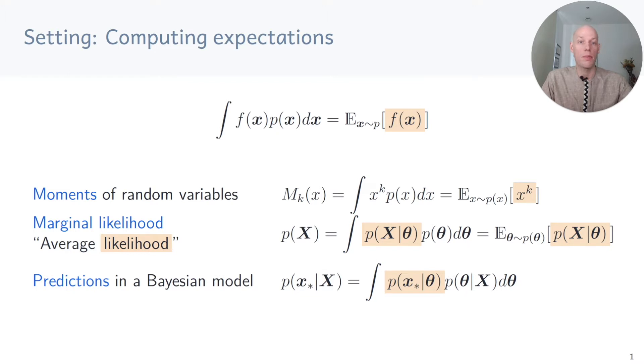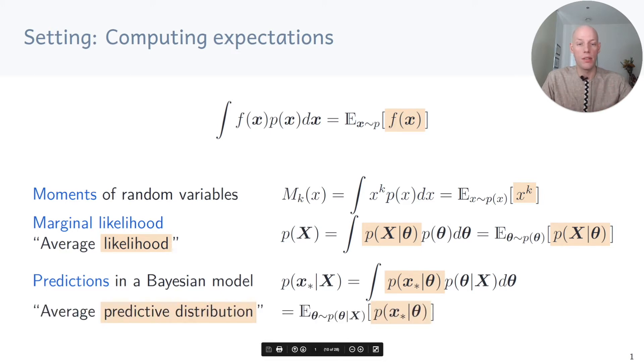A third place where expectations appear is when we make predictions in a Bayesian model. With the parameter posterior p of theta given x, the predictive distribution is the integral of p of x star given theta times this parameter posterior, which again can be written as the expected predictive distribution where the expectation is taken with respect to the parameter posterior.